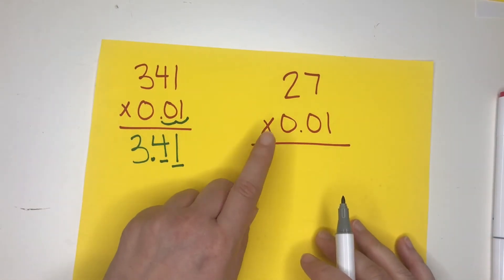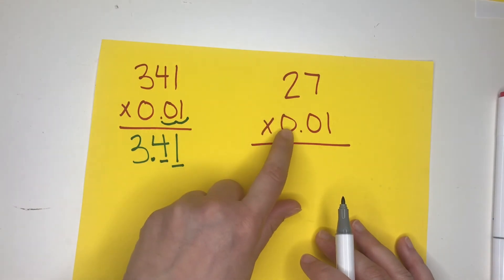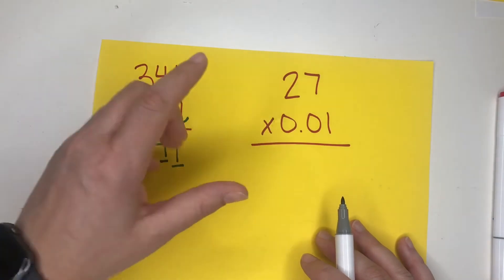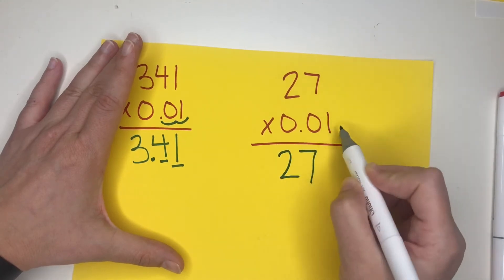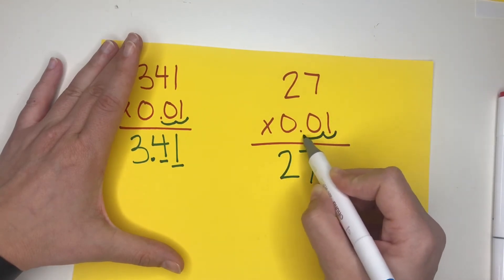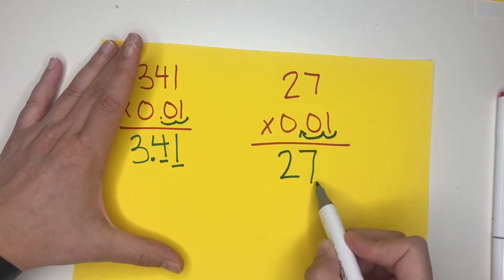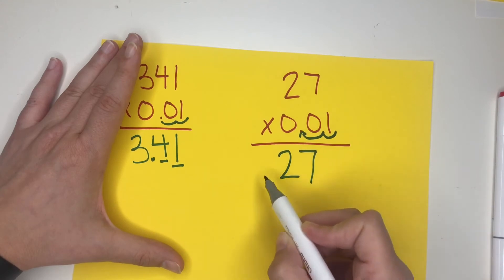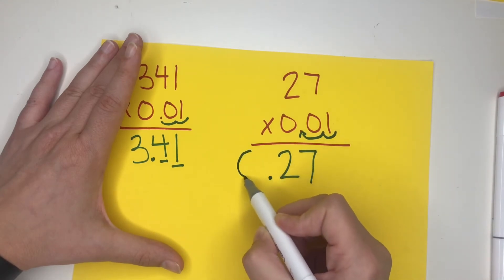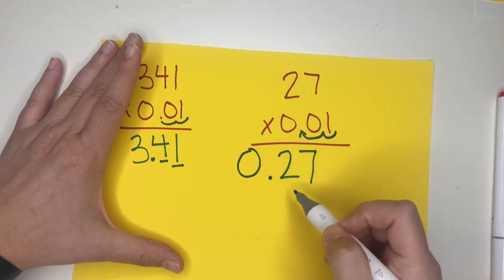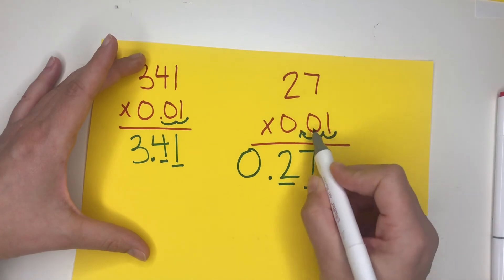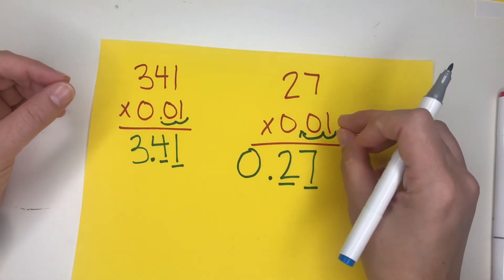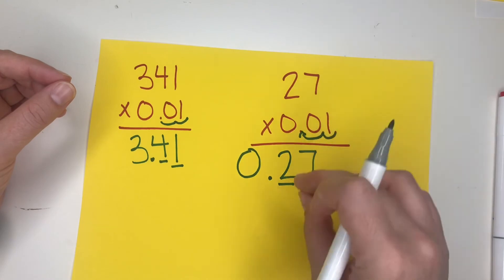This one is different because I only have a two-digit number multiplied by one hundredth. Same rule applies: 27 times 1 is still 27, but we get those decimal places in. My invisible decimal hops one, two — so our number is now less than one. We have 27 hundredths. Notice I have two places after the decimal, just like I have two places after the decimal in my factor.